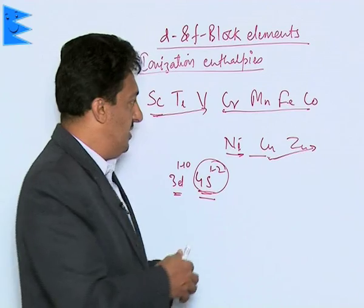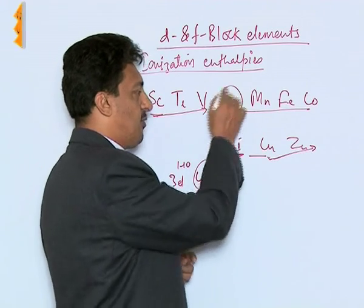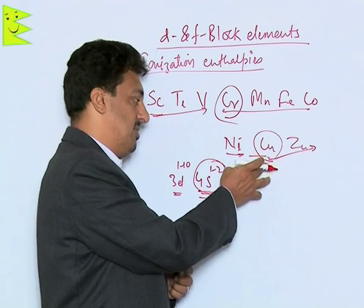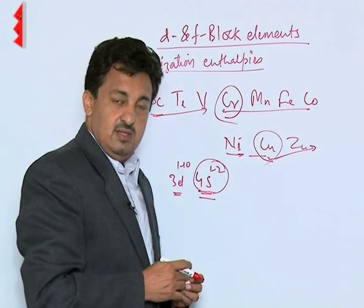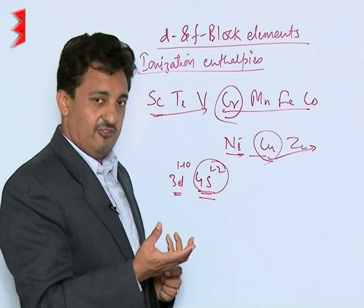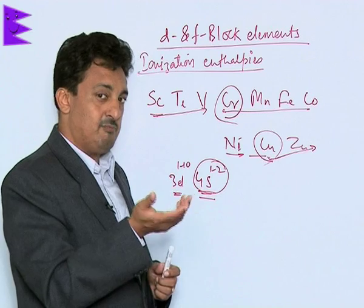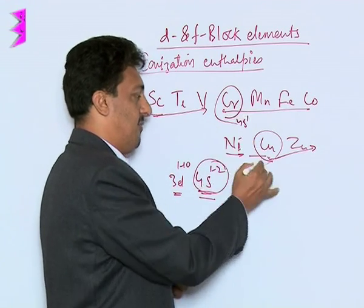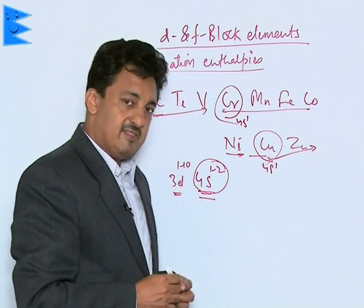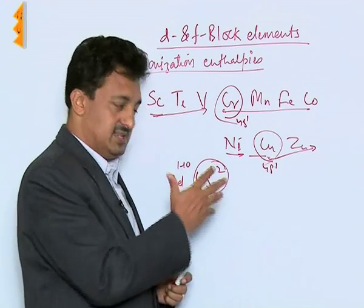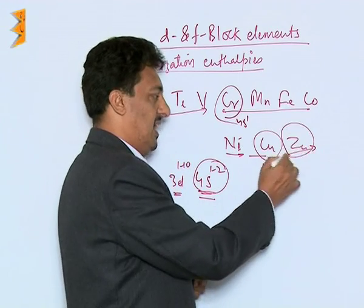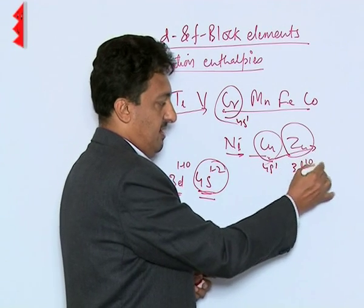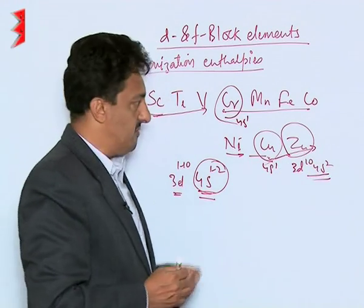We do not find such differences in the case of chromium and copper — that is why their ionization enthalpies are very similar to their preceding elements. The reason is that they have no possibility of electron transfer from 4s to 3d, because they have only one electron in the 4s orbital. The rest of the elements show changes. Zinc has the highest ionization enthalpy in the series because of its completely filled 3d¹⁰4s² configuration.